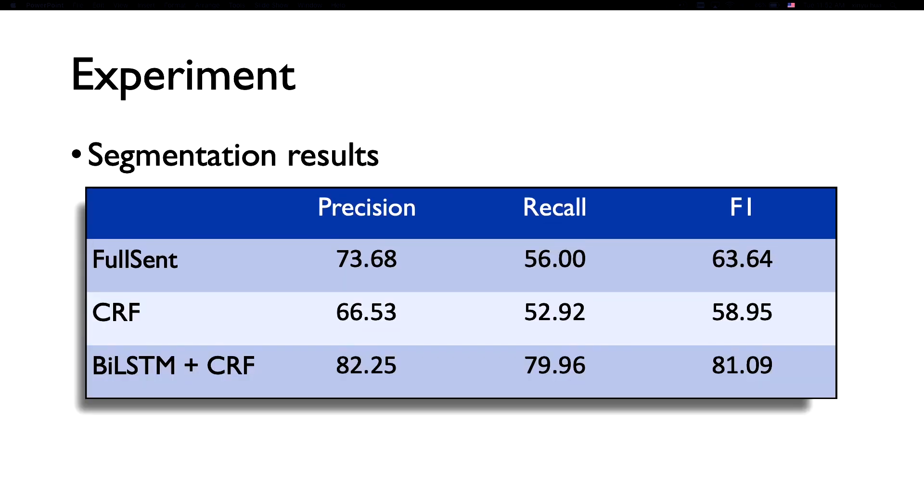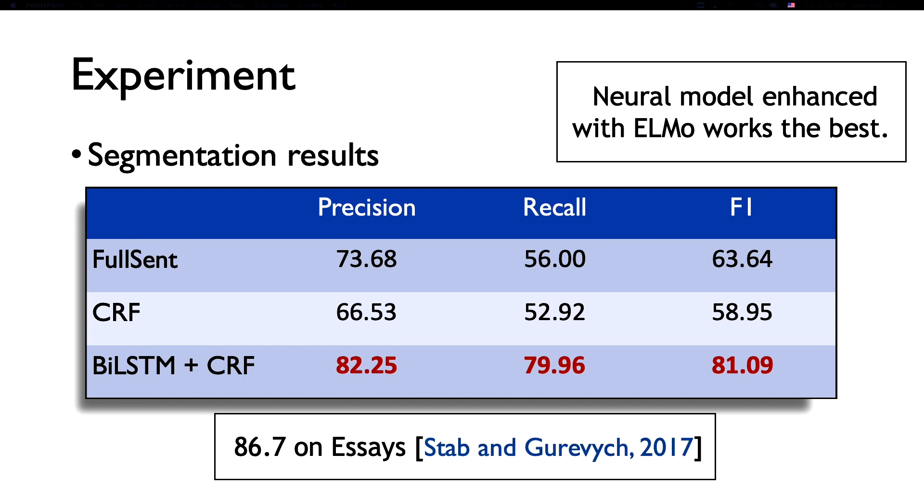The results on segmentation is listed here. The baseline method here is a full sentence baseline where we stop at the end of the sentence and treat each sentence as proposition. We can see that it has okay precision, but overall it's worse than a neural network-based model. However, we do see a slight gap between this and some similar task on different text genre on student essay, which is arguably an easier task because the schema they have is for claim and premise, and ours is more complicated, which results in very complicated sentence segmentations.